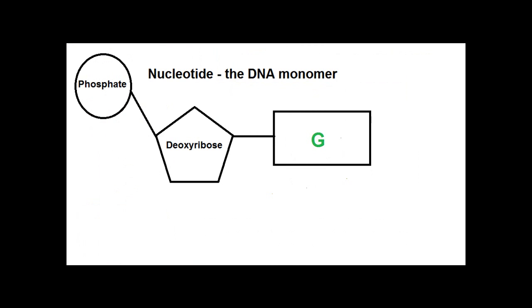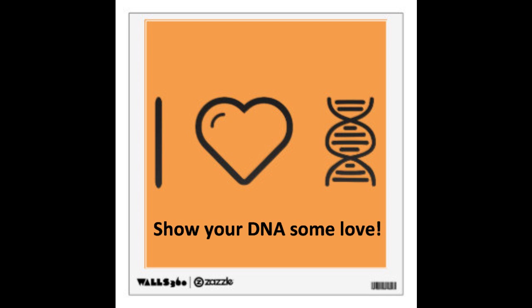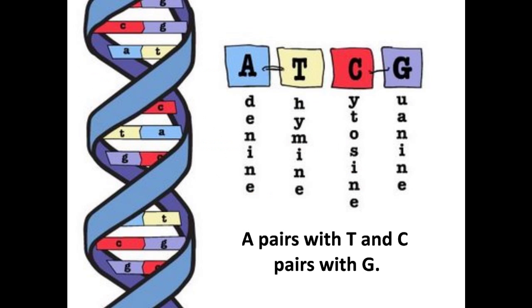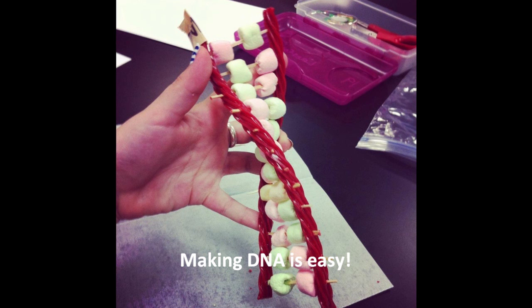Because you need a little bit of G-T-C-A. Just a little bit of G-T-C-A. Deoxyribose oxide with a phosphate above. Show your DNA somewhat. You need a little bit of G-T-C-A. Just a little bit of G-T-C-A. A pairs with T and C pairs with G. Making DNA is easy.